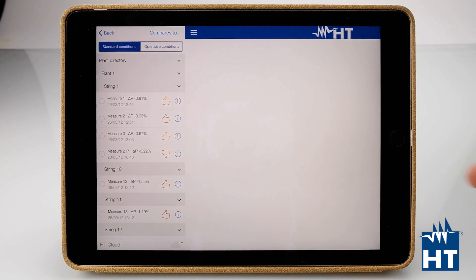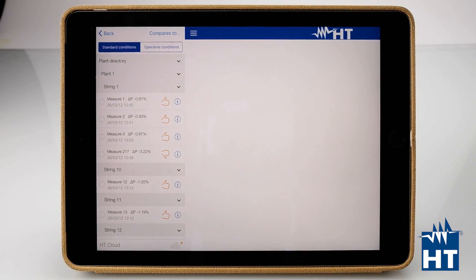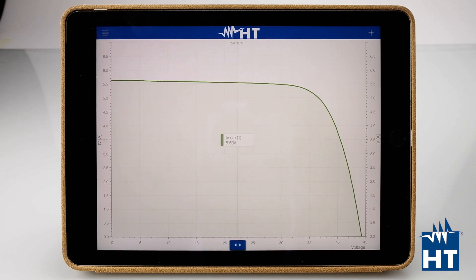We can find measure 1, measure 2, measure 3. Each measure is an IV curve. So let's test the first one.